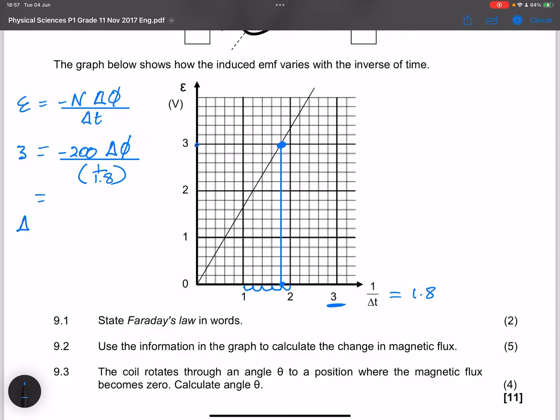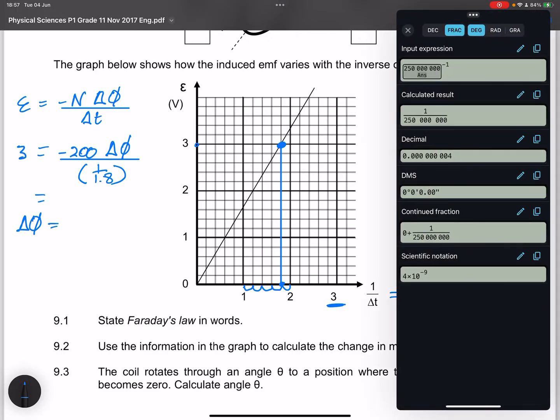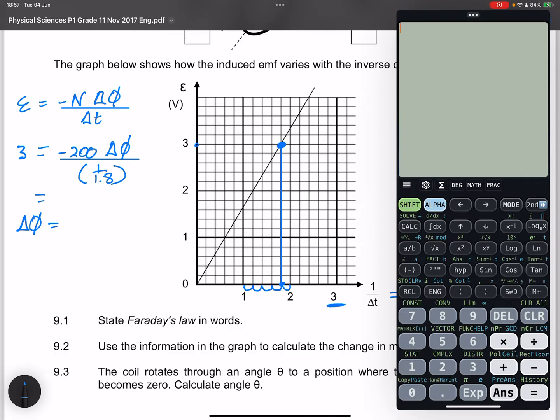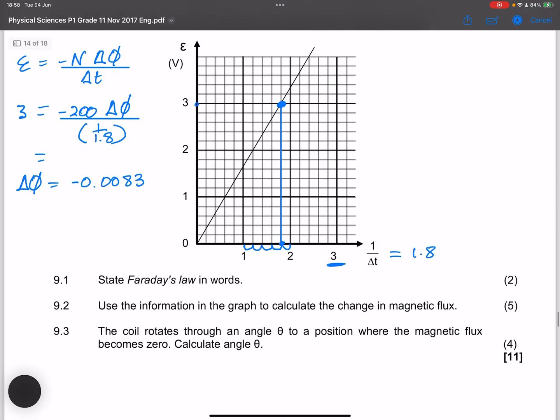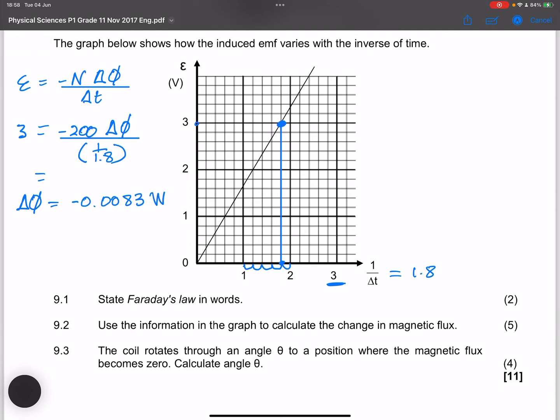Let's find out what the change in magnetic flux is. So let's whip out our calculator, we've got 3 times 1 over 1.8, and we are going to divide that by 200. So I get negative 0.0083. Remember, that is the change in magnetic flux, and we always use Webers for that.